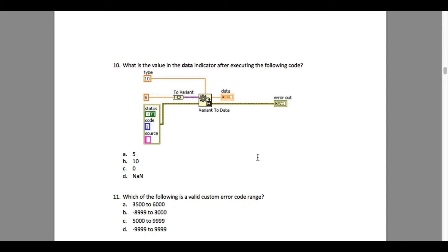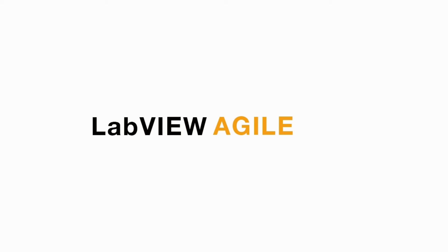Since the input is 5 and the type is 10 — note that the Variant to Data function's type value does not really matter, it can be 0, 100, or anything — that is only a reference to tell the Variant to Data function the expected data type is double. So the output is going to be 5, and the answer is A.